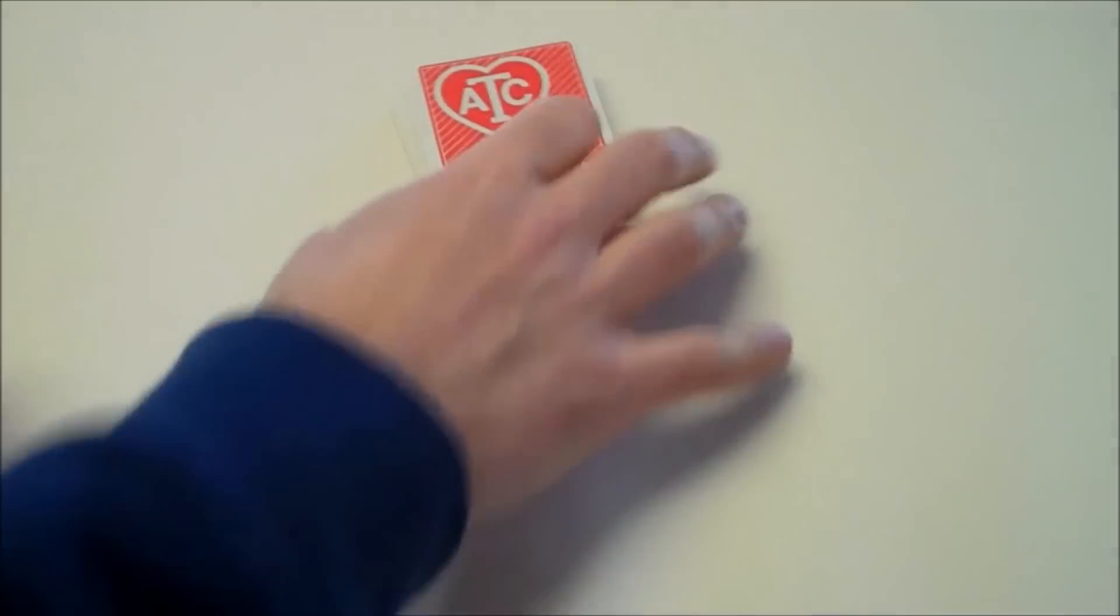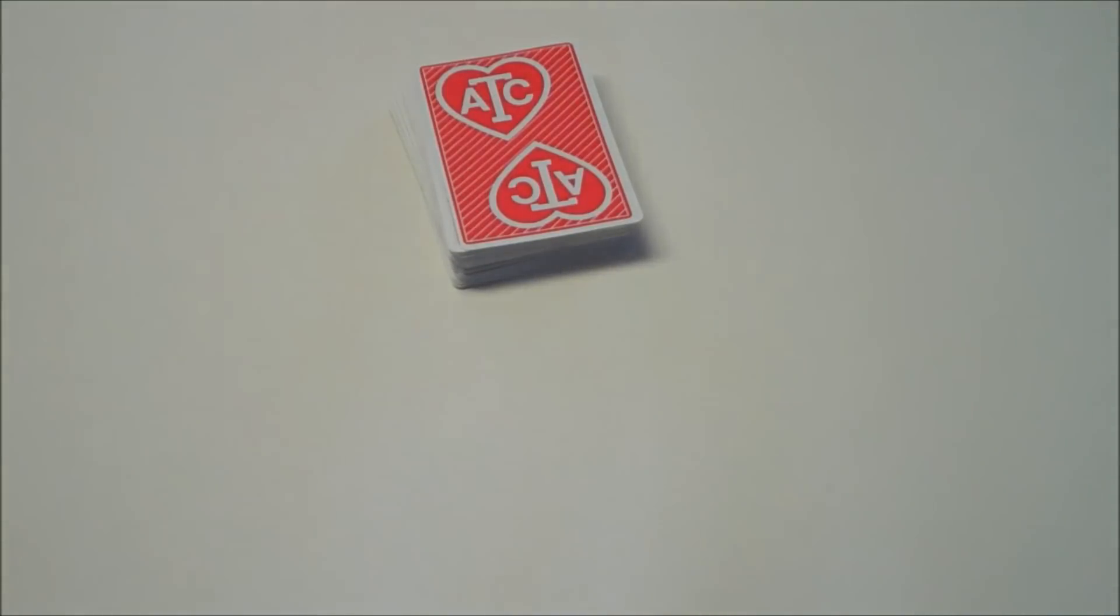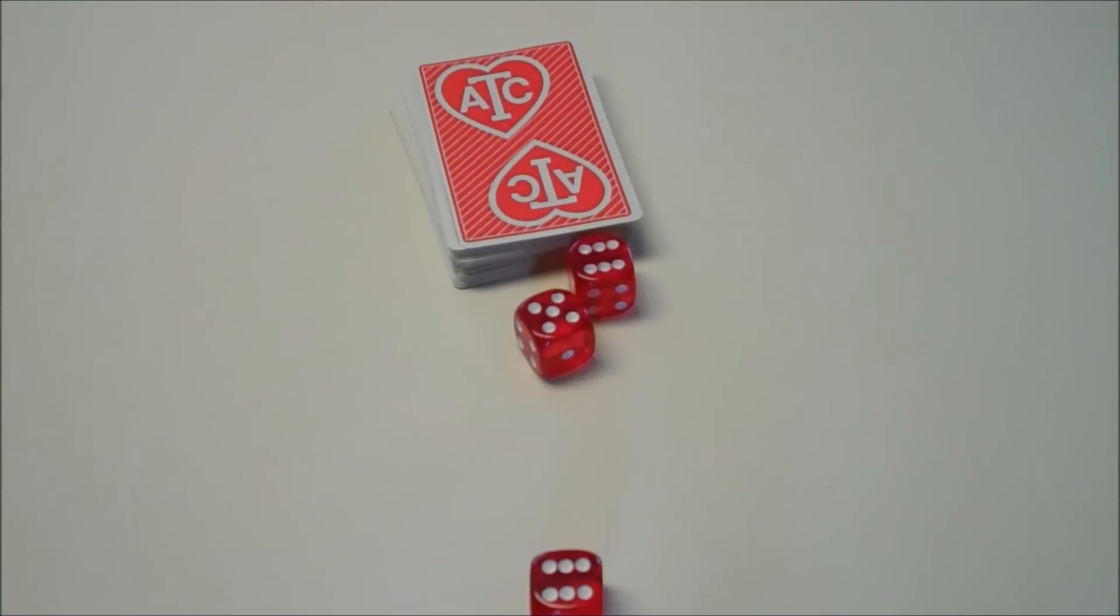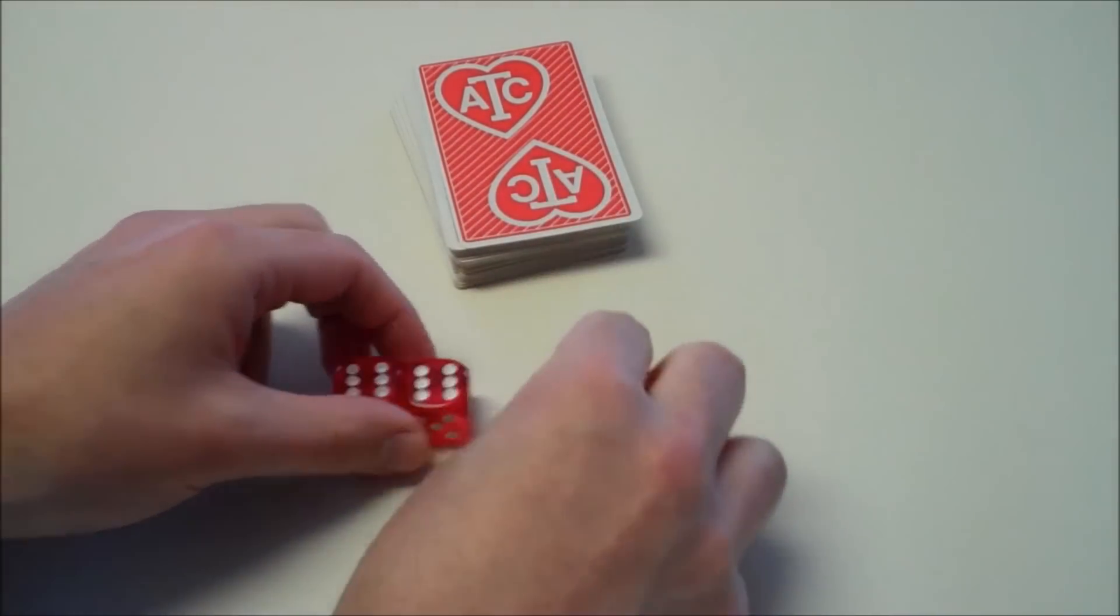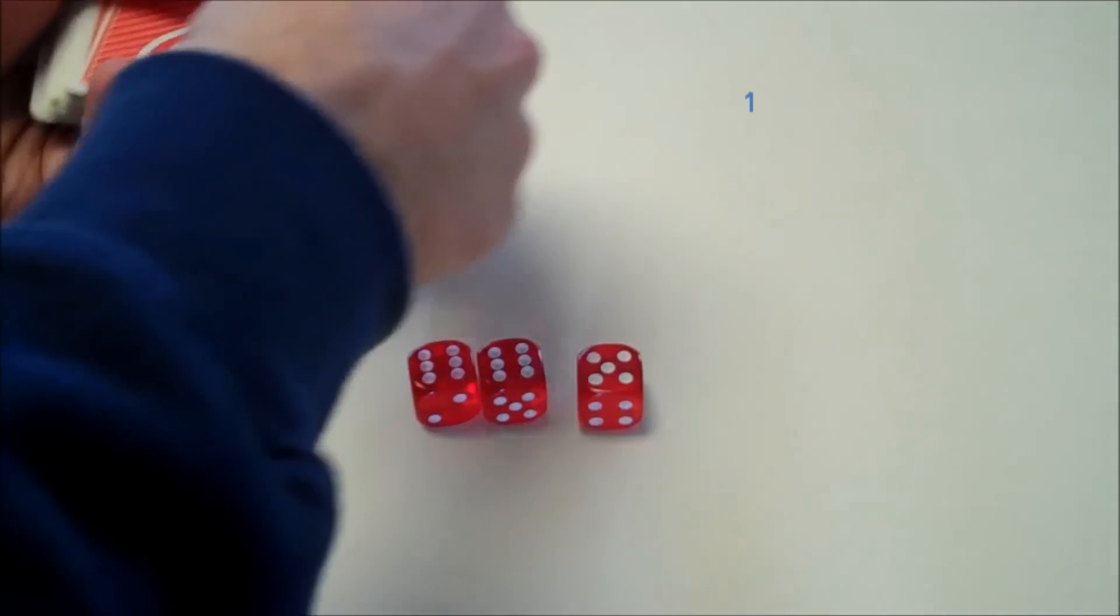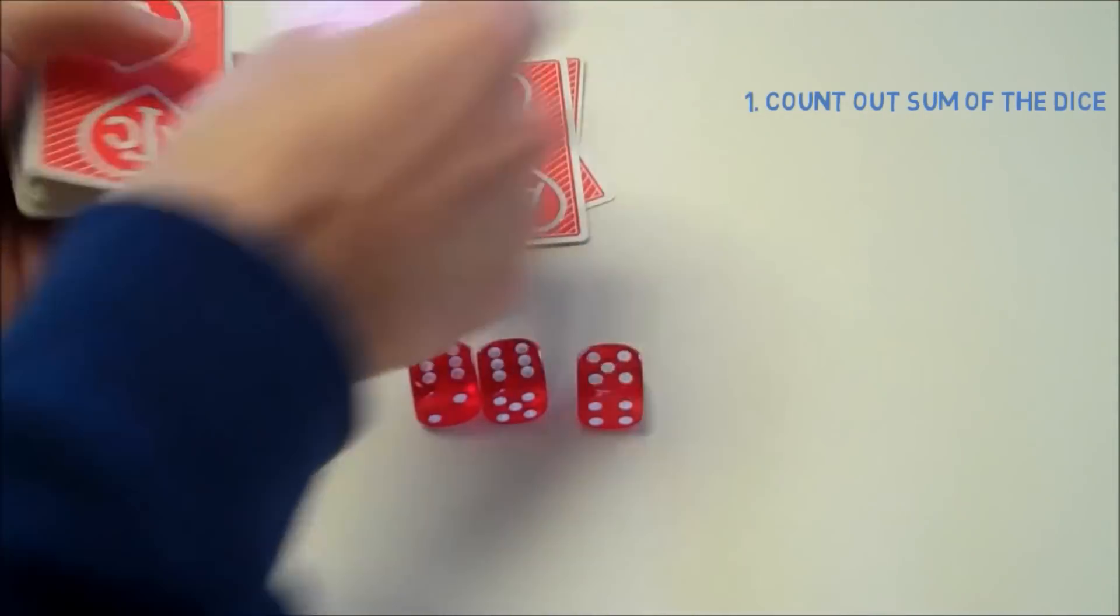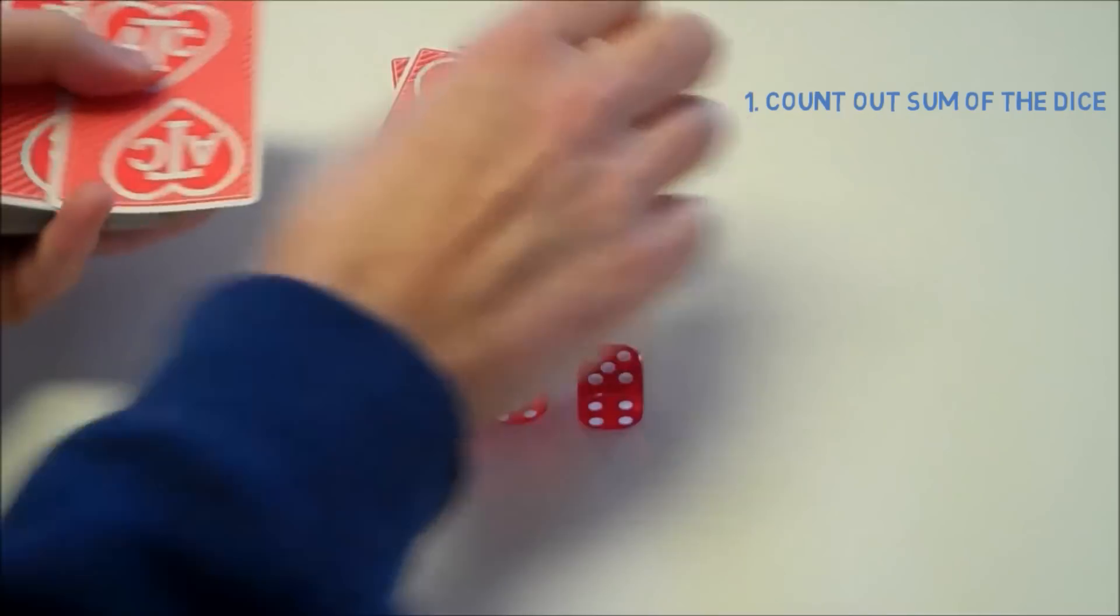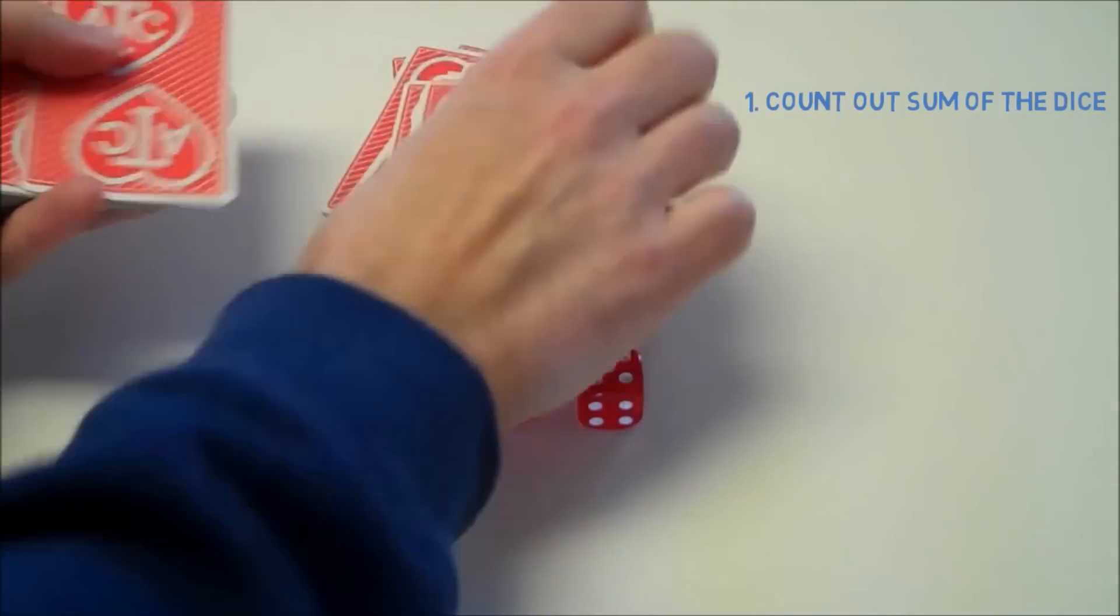We give it a riffle shuffle, and then we roll the dice. This time we have six, six, and five, which adds up to 17. So we're going to need to count out 17 cards, which is the sum of the numbers on the dice.